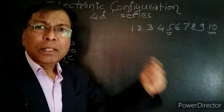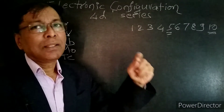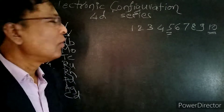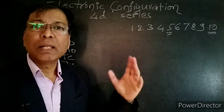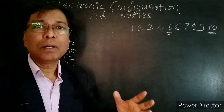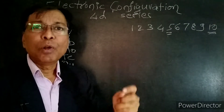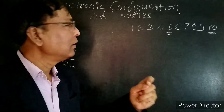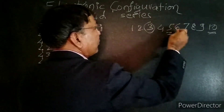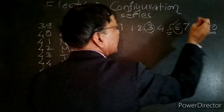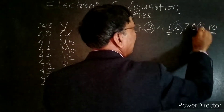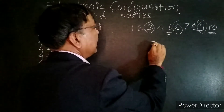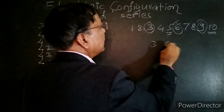In order to write the electronic configuration of the 4D series, we have to neglect the numbers belonging to the table of 3 — that is, 3, 6, and 9. We have to neglect these numbers.